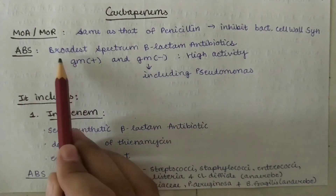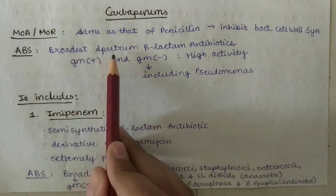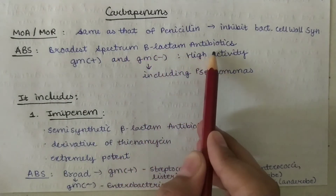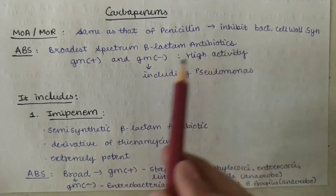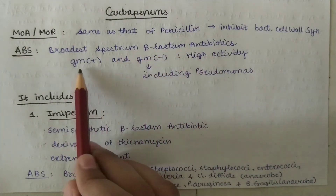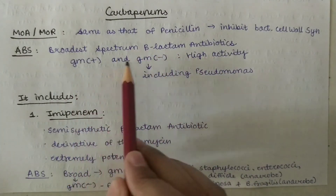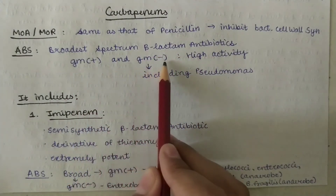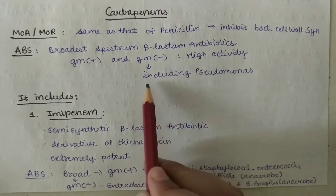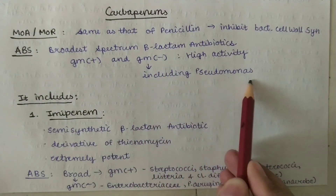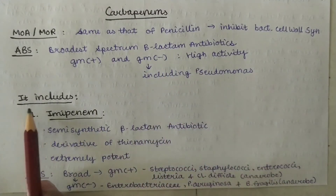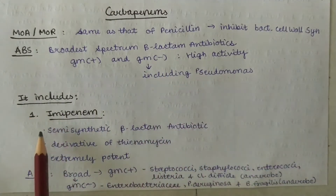Carbapenems are the broadest spectrum beta-lactam antibiotics. They have high activity against gram-positive and gram-negative organisms, including Pseudomonas.